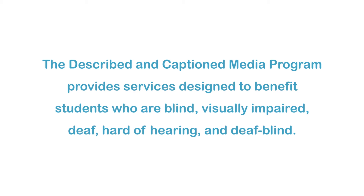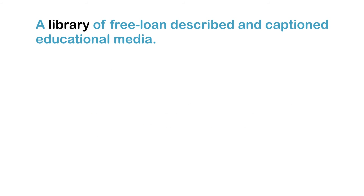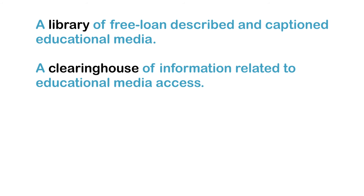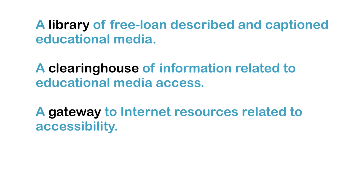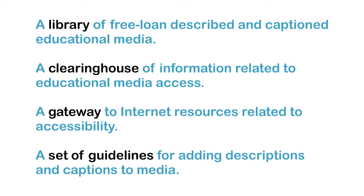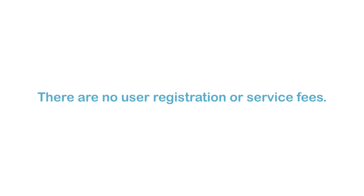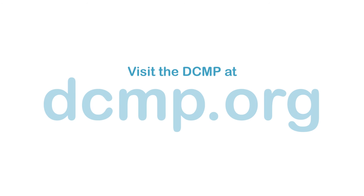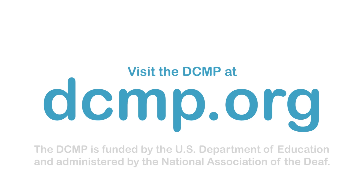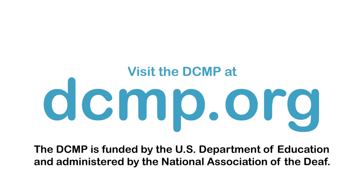The Described and Captioned Media Program provides services designed to benefit students who are blind, visually impaired, deaf, hard of hearing, and deafblind. These services include a library of free loan described and captioned educational media, a clearinghouse of information related to educational media access, a gateway to internet resources related to accessibility, and a set of guidelines for adding descriptions and captions to media. There are no user registration or service fees. Visit the DCMP at DCMP.org. The DCMP is funded by the U.S. Department of Education and administered by the National Association of the Deaf.